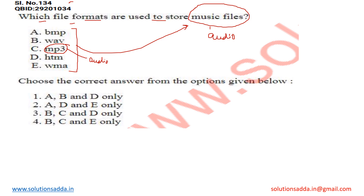To answer such type of question, the elimination method always works. So we can eliminate option numbers 1 and 2 directly. By observing the remaining options BCD and BCE, we know option C is right.